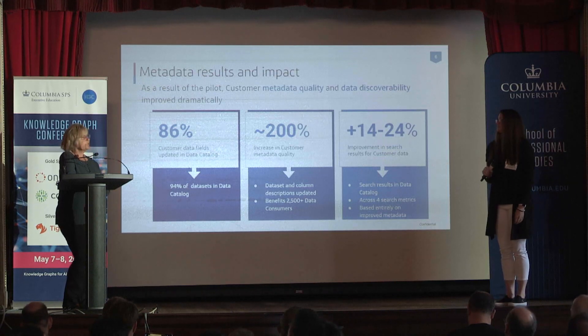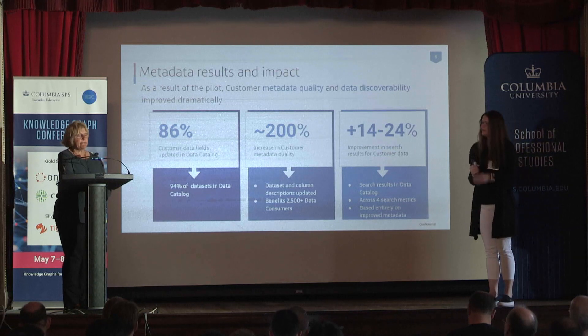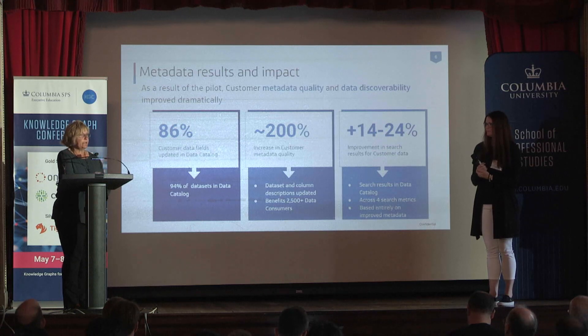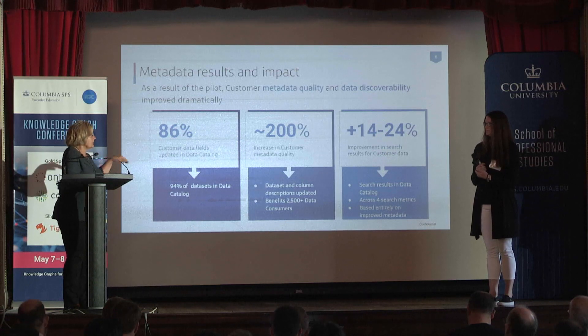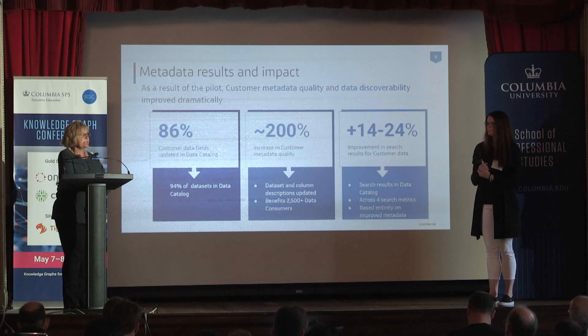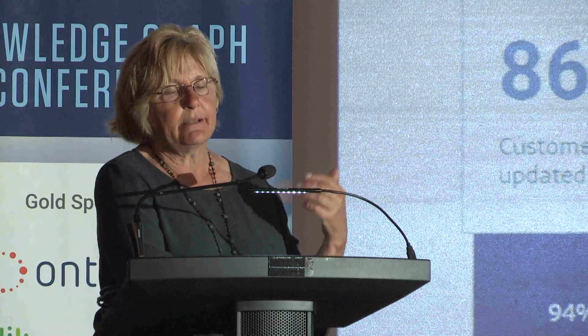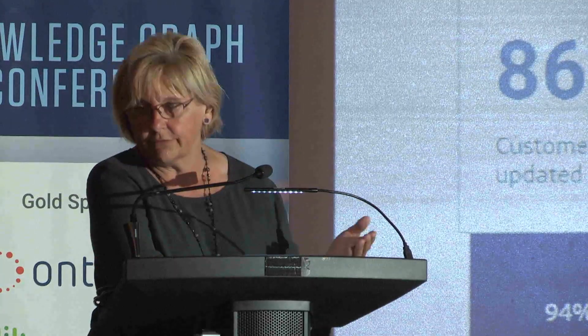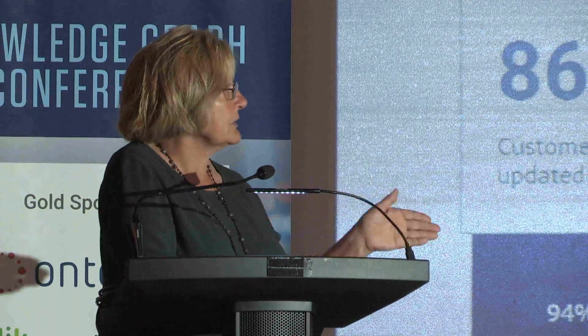That's really important because one of the issues data analysts have at Capital One is finding the data they want quickly, understanding that data, and then moving on with it. Before we started doing some of this, the search would bring back lots and lots of data, the metadata wasn't 100% clear, and they had to search and really try to understand. One of the important things we want to make sure of at Capital One is that they're using the right data for the right reason, for the right purpose, and that they have access to it.